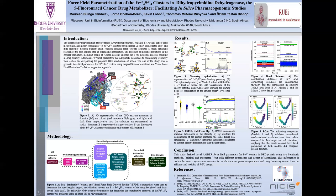More interestingly, the residues connected to the ion center showed least fluctuation, which means that the derived parameters were good, whereas the loop regions of the protein showed higher fluctuations. Furthermore, the principal component analysis showed that both the apo and the drug-bound systems showed a similar conformational phase space, suggesting the derived force field parameters did not compromise protein function.